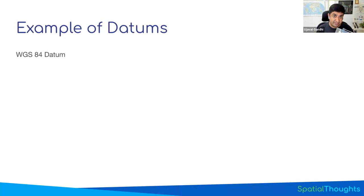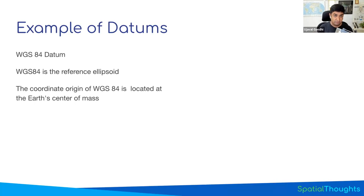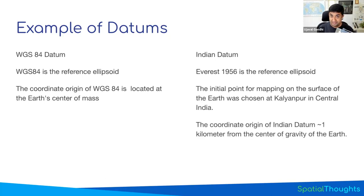As GIS professionals, when somebody gives us latitude and longitude coordinates, we cannot automatically assume we know where the place is — we need to ask which datum those coordinates are referenced to, because the position can vary significantly. The most popular datum is WGS84, used by the GPS system. This is the reference ellipsoid that best fits current satellite measurements, with Earth's center of mass as its center. There are other datums too — for example, the Indian datum used an ellipsoid called Everest 1956, with different semi-major and semi-minor axis values and an origin oriented to fit the Indian subcontinent. Old Indian maps must use this datum as reference.